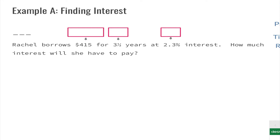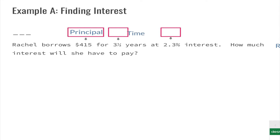We need to figure out which things we have so we know which variable we're looking for — that's very important. Rachel borrows four hundred fifteen dollars, so that's our principal. For three and a half years, so that's our time T. At two point three percent interest, that's going to be the rate R — even though it says the word interest, it's talking about the rate at which we're borrowing.